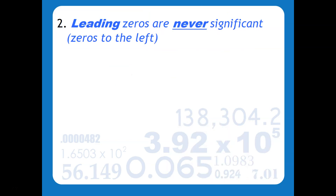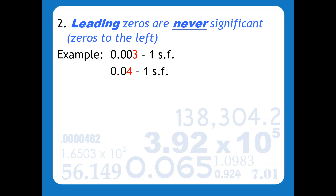Here's where we get into the zeros. Leading zeros are never significant, and when we think about the word 'leading,' think about it meaning in front. So for example, if you have 0.003 there's only one sig fig there — the zeros in front are merely placeholders. 0.04 again has only one sig fig.